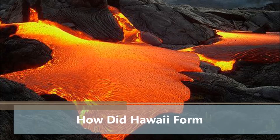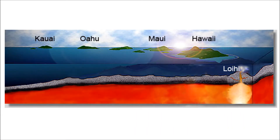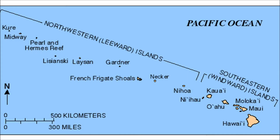How did Hawaii form? The Hawaiian archipelago stretches above the Hawaiian ridge, a line of volcanoes running 1,615 miles along the floor of the Pacific Ocean.